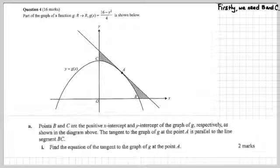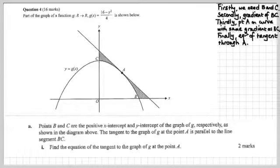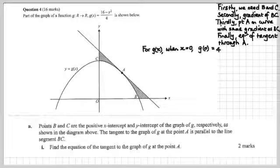Let's do that. So firstly we need B and C. Secondly, we need the gradient of BC. Thirdly, a point A on the curve with the same gradient as BC. Finally, we get the equation of the tangent line through A.